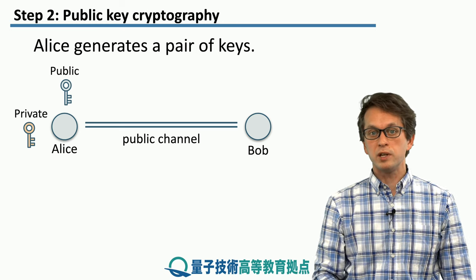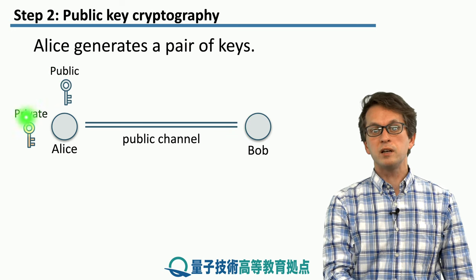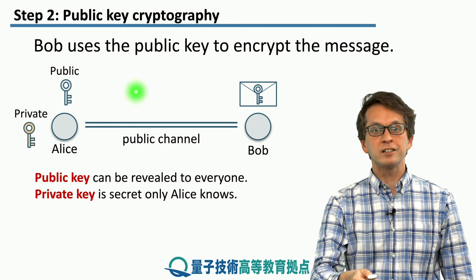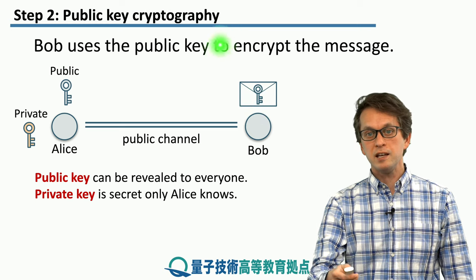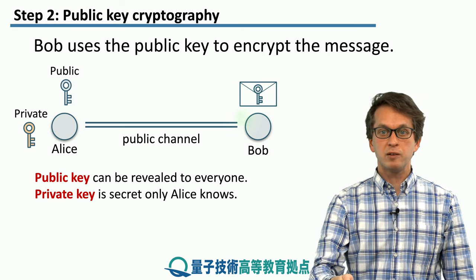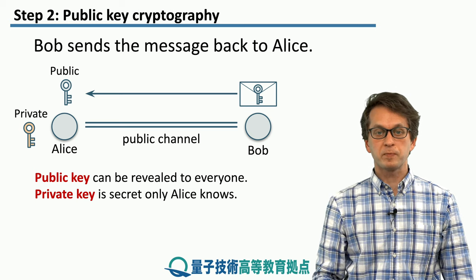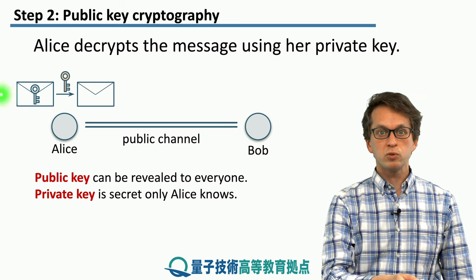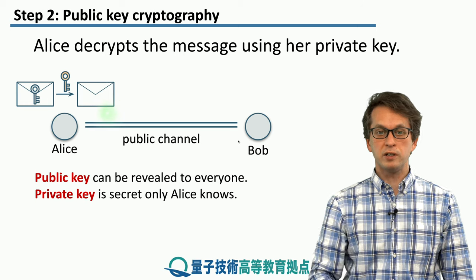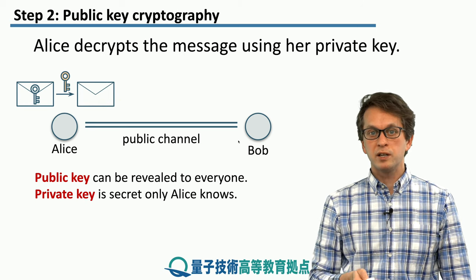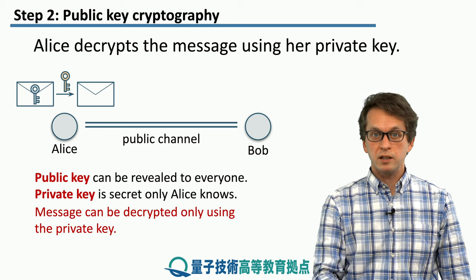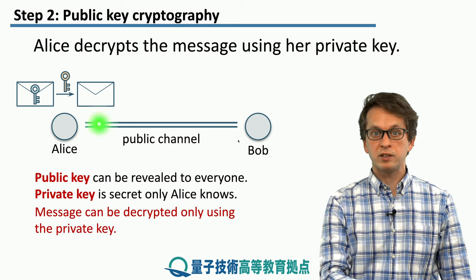What Alice does is she generates two keys: one is known as the public key and the other is known as the private key. She then sends the public key to Bob, who uses it to encrypt his message and sends it back to Alice. She then uses the private key — which she did not communicate to Bob — to decrypt his message. So in public key cryptography, the public key is used to encrypt the message, but it cannot be used to decrypt it. The message is decrypted by the private key that Alice generated but did not share over the public channel.